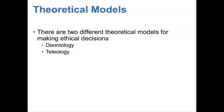On the other hand, teleology seeks balance and harmony. Moral goodness is subordinate to achieving balance, and moral rules or absolutes are not required and are not deemed useful under this theoretical model. This is more utilitarian thinking, which seeks the greatest good for the greatest number of people. Teleological correctness is determined by the extent of utility in outcomes and final results.